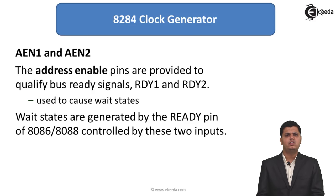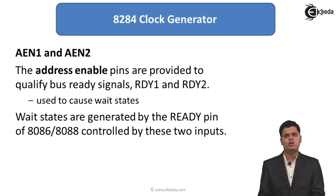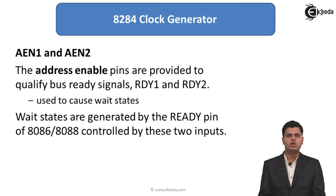The two pins named AEN1 and AEN2 are called address enable pins. They are provided to qualify the burst ready signals RDY1 and RDY2, which are used to cause wait states. Until AEN1 and AEN2 are enabled, the ready signals are not of any use. So to qualify these signals, AEN1 and AEN2 are used for adding wait states for the ready pin.